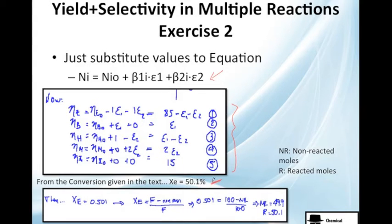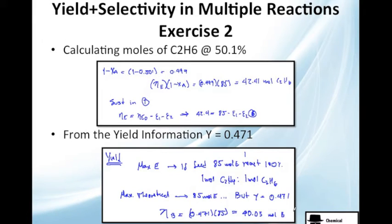We have also a conversion. We've got to use it right now. So, we calculate epsilon. Since X of E is equal to 0.501, we can go to this equation. Which is 0.501 equals 100 of feed minus non-reacted divided by 100. The non-reacted will be almost half and the reacted will be almost half too.